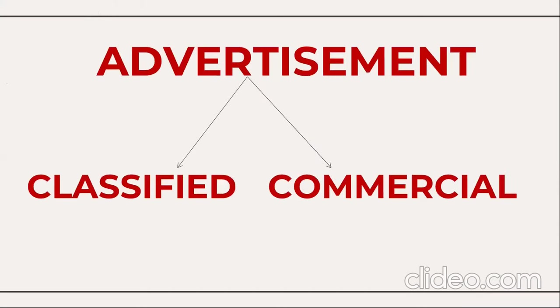To begin with, let's try to understand that there are two types of advertisements which appear in the newspaper. One is called classified and the other is called commercial. So let's first know about the classified advertisement.